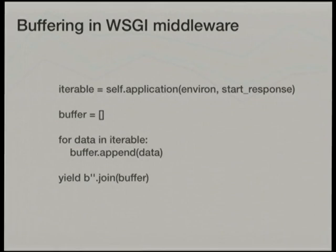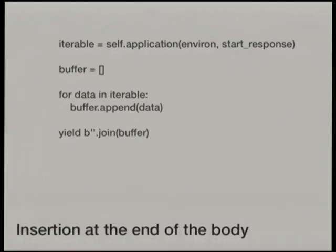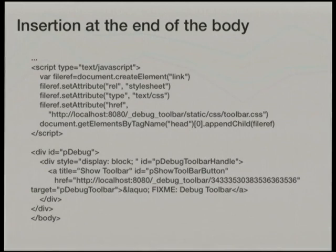We could buffer all the response content in the middleware and then operate on the complete response, then send it on after adjusting the content length. Technically, though, you're not meant to do this in WSGI middleware, and it would cause applications that slowly stream data to break since nothing would be sent until all content was generated. A very large file being streamed could also be a problem for memory. The reason we insert at the end of the body is that part of what's being inserted consists of JavaScript code, and the wisdom is it should go at the end of the body so as not to delay page loading.